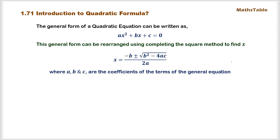By doing that, we obtain the final completed square form which is x equals minus b plus or minus the square root of b² minus 4ac, all over 2a. This completed square form of the general quadratic equation is simply known as the quadratic formula, and it is a very simple way to solve any quadratic equation by identifying the values of a, b and c and substituting them into this formula.